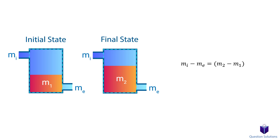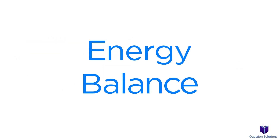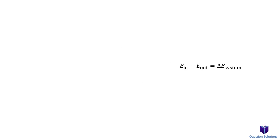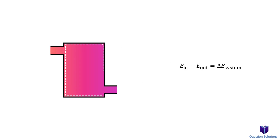If no mass enters the control volume during the process, then this term is zero. If no mass leaves, then this is zero. And if there is nothing inside the control volume at the initial stage, then this is zero. The energy balance for a control volume can be written like this: the energy in minus the energy out gives us the change in energy of the system.